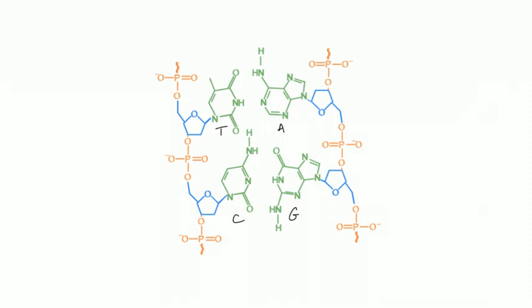A few picky details worth knowing for Step 1: if you remove the amino group from cytosine you get uracil — so deamination of cytosine makes uracil. Uracil is found in RNA while thymine is found in DNA. Also, the G-C bond in complementary DNA strands has three hydrogen bonds, while the A-T bond has only two hydrogen bonds.